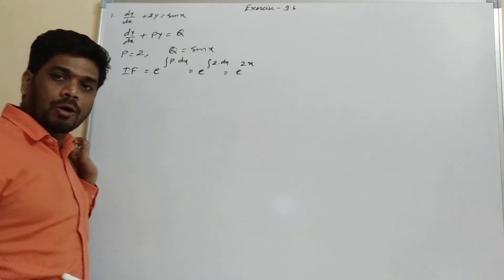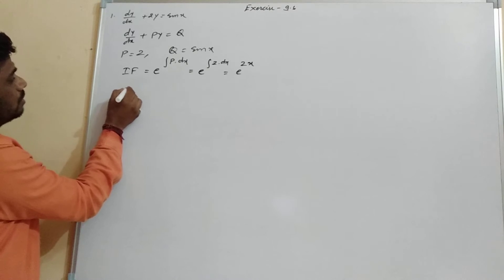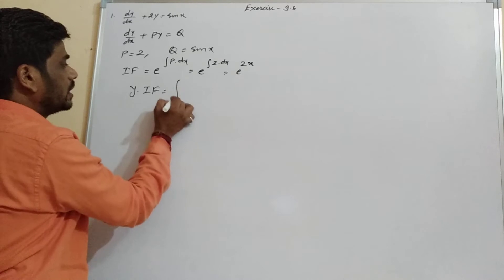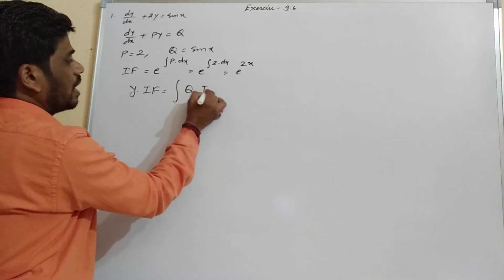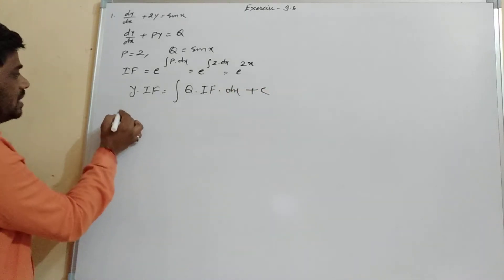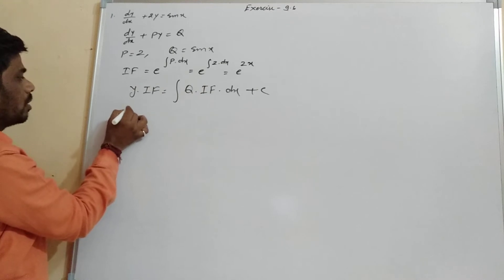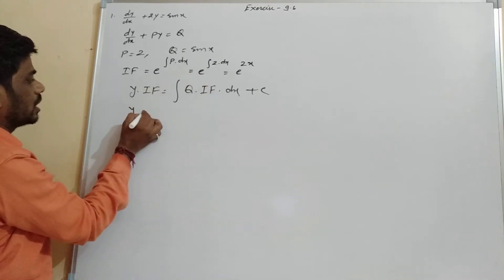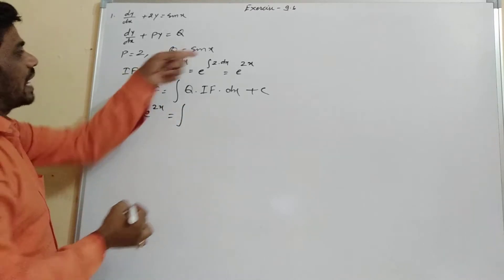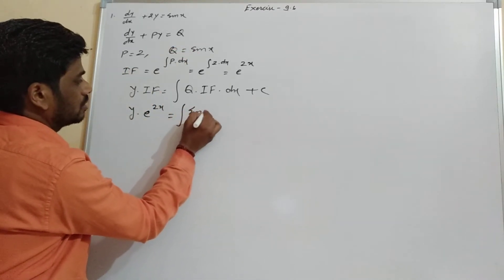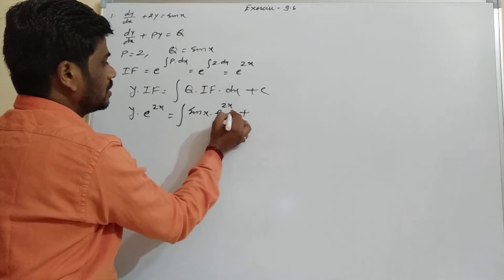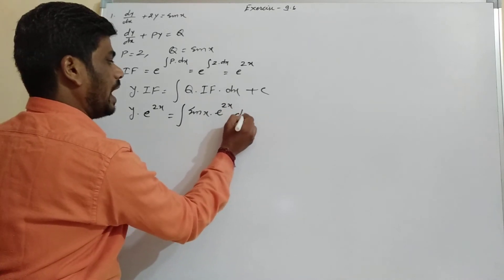So IF equals e raised to power 2x. Now the equation for the solution is y into IF equal to integration of Q into IF into dx plus c. Q we got sin x, so we write sin x into e raised to power 2x dx plus c.